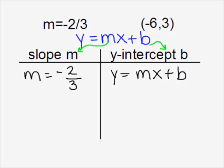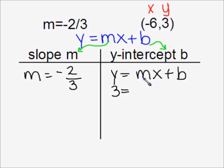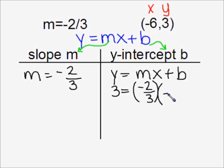Because we were given a point, we were given an x value and a y value. Substituting those into our equation, y can be replaced by three, our slope m can be replaced by negative two-thirds, and our x can be replaced by negative six. That leaves us with b and we can solve for that.